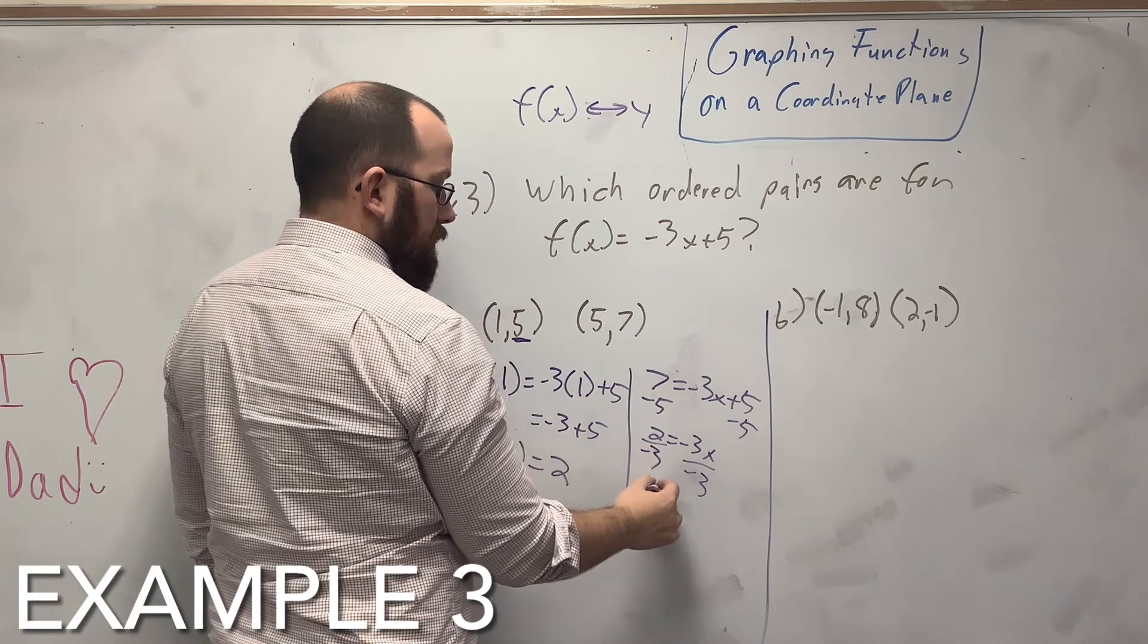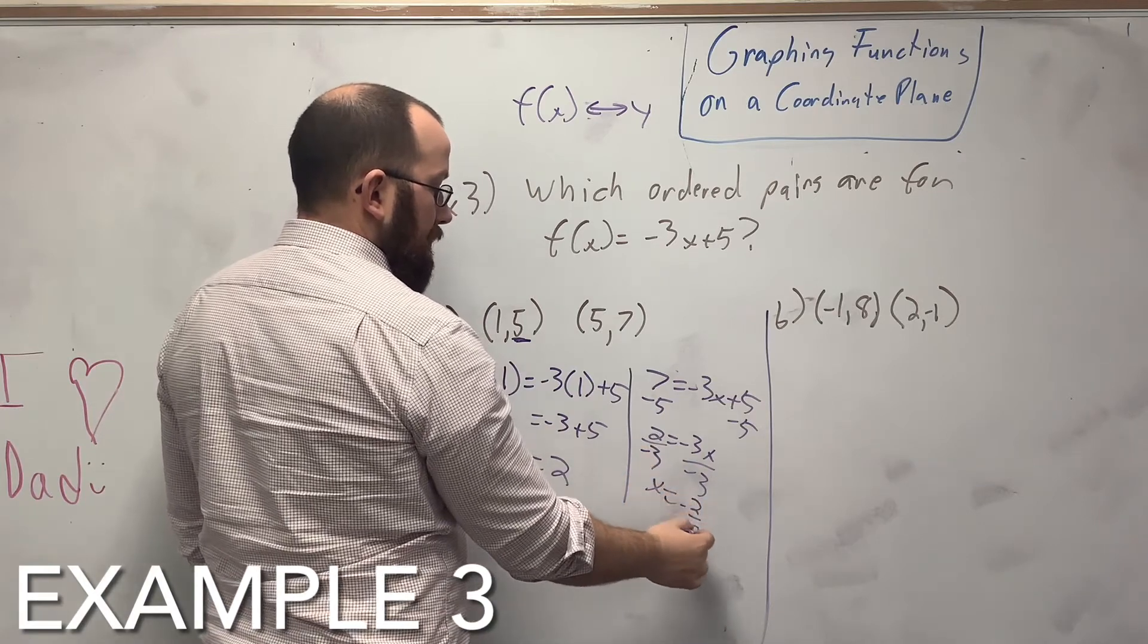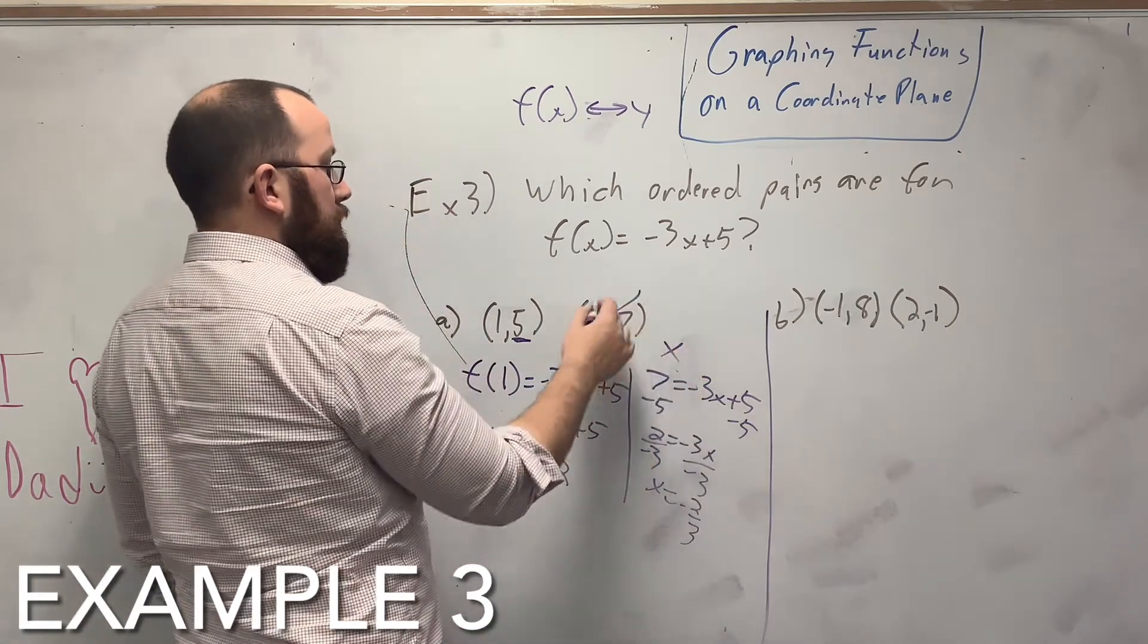If you want to do it this way, you could. But negative 2 thirds is not the answer. So neither of these are.